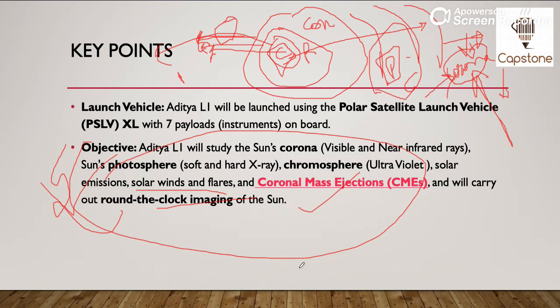Toh agar sun ki structure ko hum samajh lein, toh is pure mission ke baare mein humein samajh mein aa jayega. Solar emissions kya hai — jo charged particles ki ek flare hai, jo charged particles ki layer hai, jo sun ke coronal part se nikal rahi hai. Aur agar woh apne saath saath kuch objects ko bhi le ke jaayenge, toh unhe coronal mass ejection kahenge. Aur inko imaging karna hi Aditya L1 ka ek purpose hoga. Aur launch kiya jayega Aditya L1 ko PSLV-XL se, jo PSLV ka sabse behtareen variant hai, aur iske andar saat payloads honge.